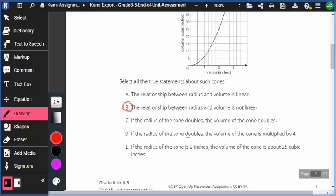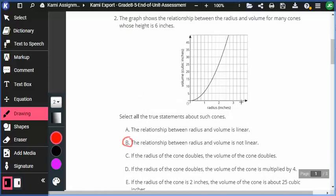How about this one? If the radius of the cone doubles, the volume of the cone is multiplied by four. That's a possibility. If we say, all right, well that's maybe six or seven, and this is about twenty-six, twenty-seven, that's really close to four. That's pretty close to four. So, that's true.